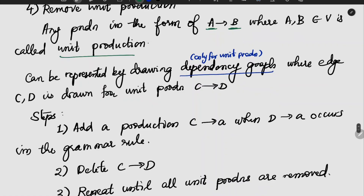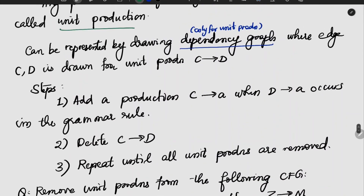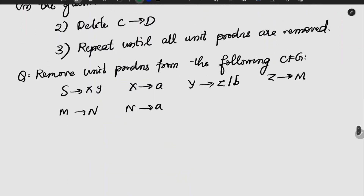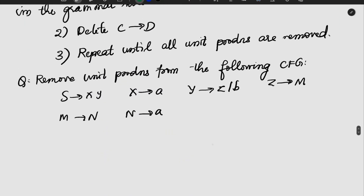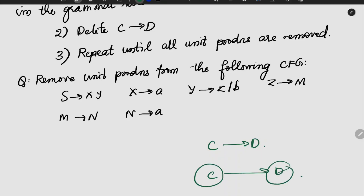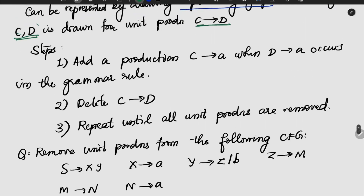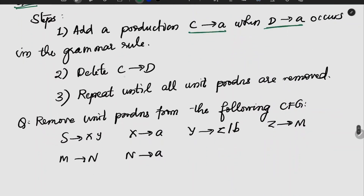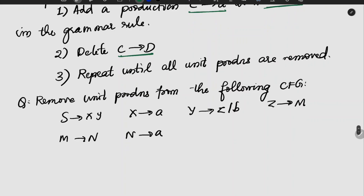A dependency graph is used here. For example, if we have a production C gives D, that would be states C and D connected by an edge. If C gives D and D gives A also occurs in the grammar, then we add production C gives A and delete C gives D.